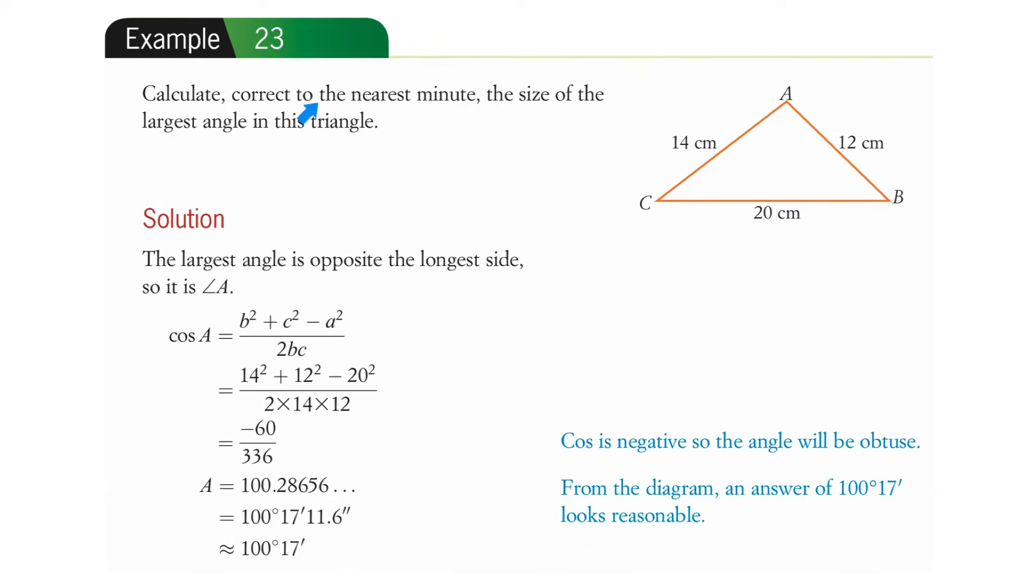Example 23. Calculate correct to the nearest minute the size of the largest angle in this triangle. So we've got to find the largest angle. This is a good question because we know that the largest angle is going to be opposite the longest side. So it's going to be there. We're looking for A. We have the other three. We have the three lengths of the sides, so we can find that angle.